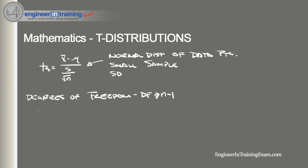Now, the t-distribution has the following properties. First, the mean of the distribution is equal to 0.